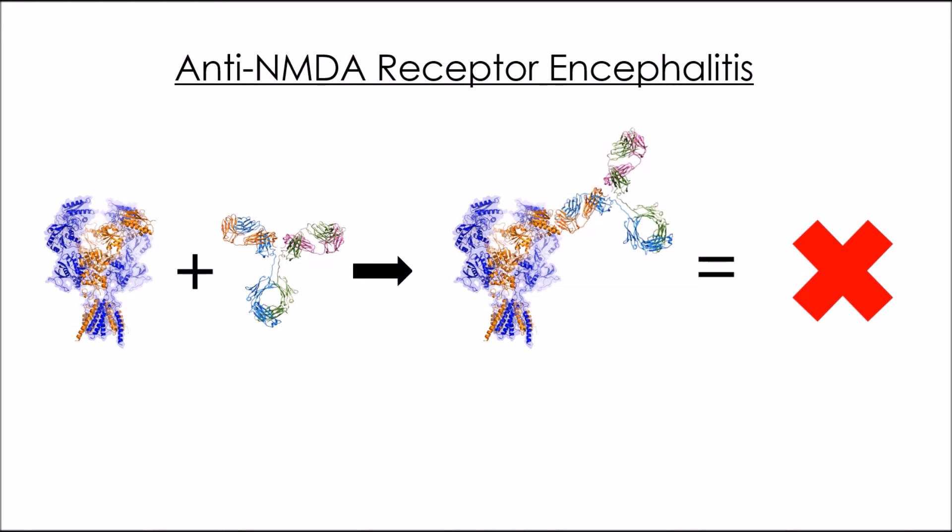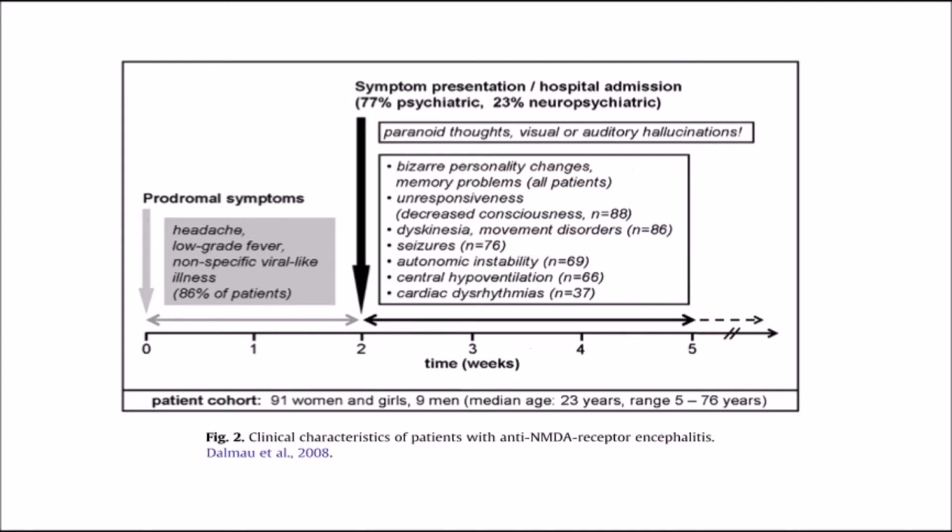A disease which makes this fact apparent is anti-NMDA receptor encephalitis, an autoimmune disorder targeting the NMDA receptor which results in its elimination. The result of this loss of NMDA receptors is a series of neurological symptoms which progressively worsen.